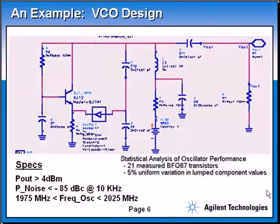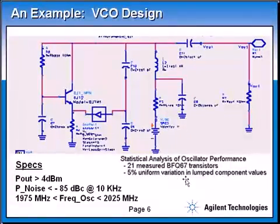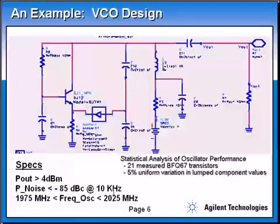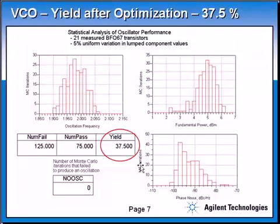Here's an example to illustrate this whole concept. We have a VCO design that has about 10 components. This is a bipolar transistor BFQ67. We are using 21 different measured transistors when we run the yield analysis, and we are varying all the lumped components with 5% uniform variation. My specs are: power output greater than 4 dBm, phase noise less than minus 85 dBc at 10 kilohertz offset, and frequency of oscillation between 1975 to 2025 megahertz. These are the capacitors along with the inductor — the resonator. We ran Monte Carlo yield analysis and the yield came out to be 37.5% based on these specs.